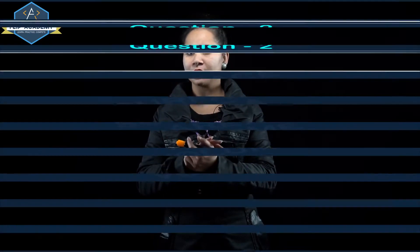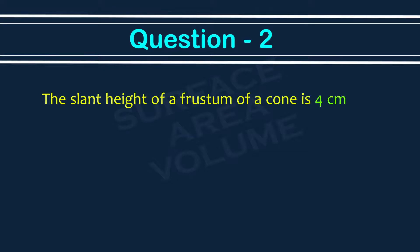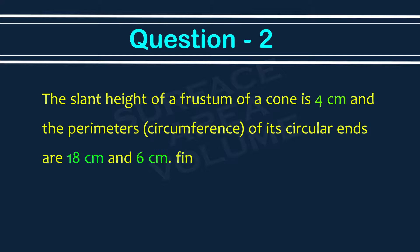Surface area and volume, Exercise 13.4, Question number 2. The slant height of a frustum of a cone is 4 centimeter and the perimeter, means circumference, of its circular ends are 18 centimeter and 6 centimeter. Find the curved surface area of the frustum.